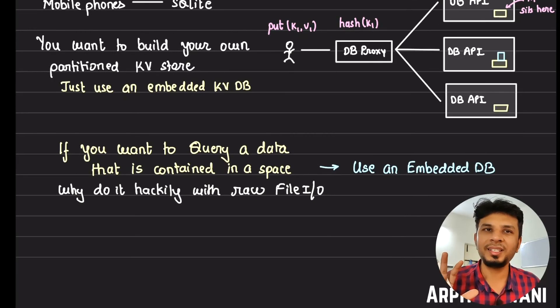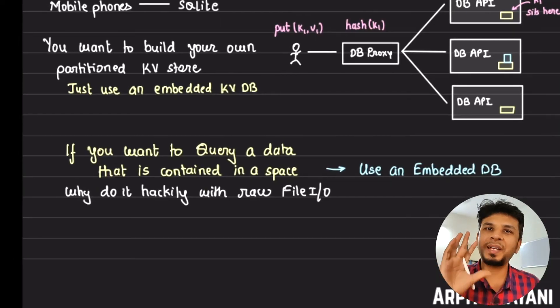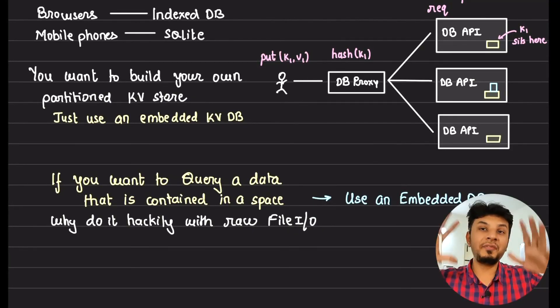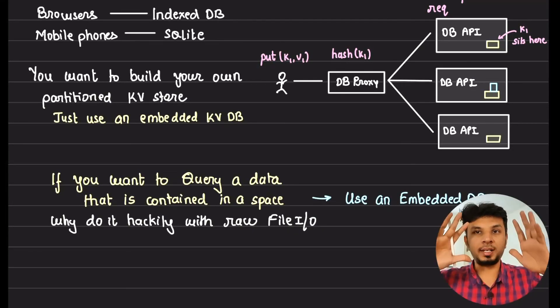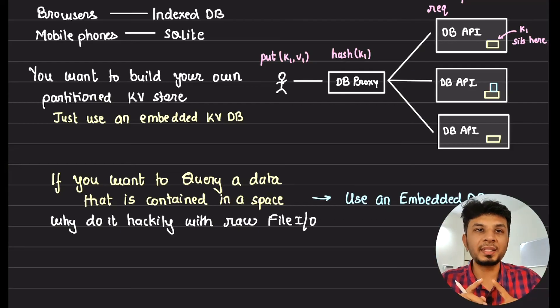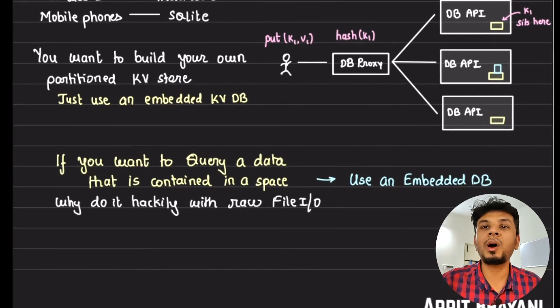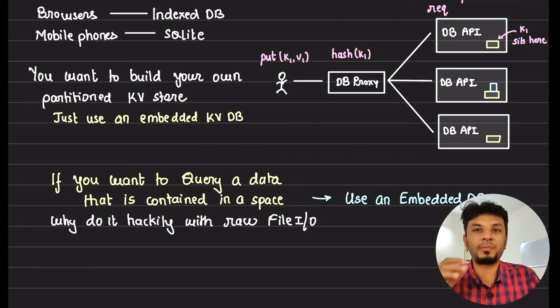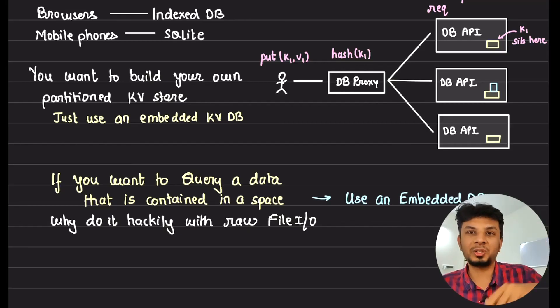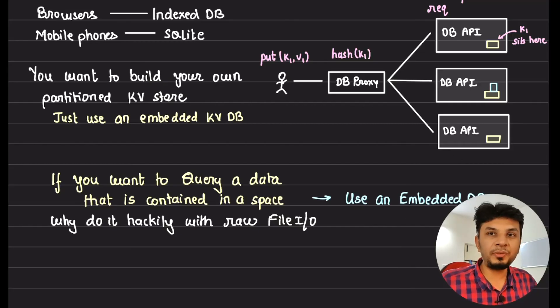So in a gist, if you'd want to ever query data, if it is okay for you that that particular database is confined within a space, you can go for an embedded database rather than reinventing the wheel, trying to hack your way out from the local machine or from the local disk. It's always better to use an embedded database which gives you very nice get, put, delete. And if you're using SQLite, it gives you a raw SQL-like interface to fire advanced queries, create small indexes on it and whatnot. So anytime if you find such use cases, go for an embedded database. They're mind-blowing, to be really honest. Every database really solves for a niche.